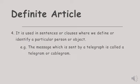Definite article is also used in sentences or clauses where we define or identify the particular person or object — orang yang mana, benda yang mana. See the example: 'The message which is sent by telegraph is called a telegram or cablegram.' The message — message yang mana? Which is sent by telegraph. Ini yang namanya particular person or object.